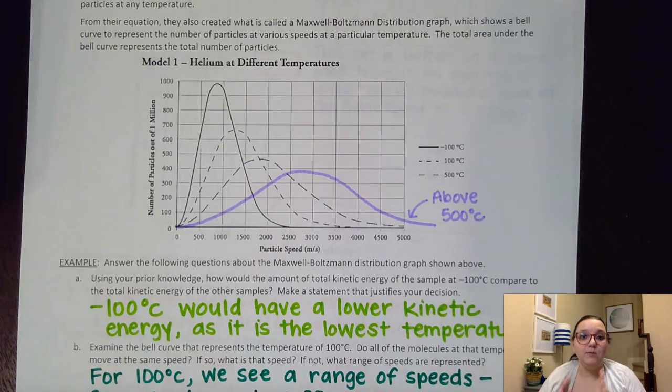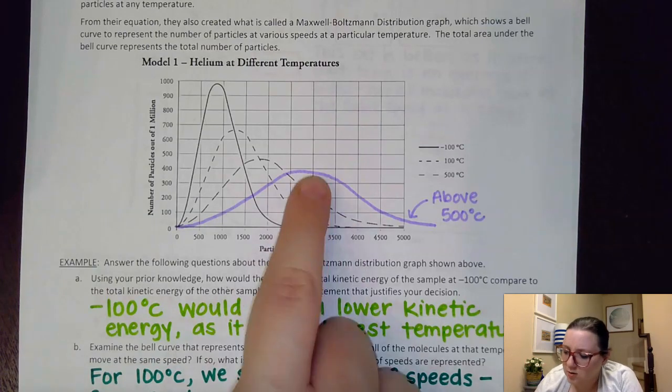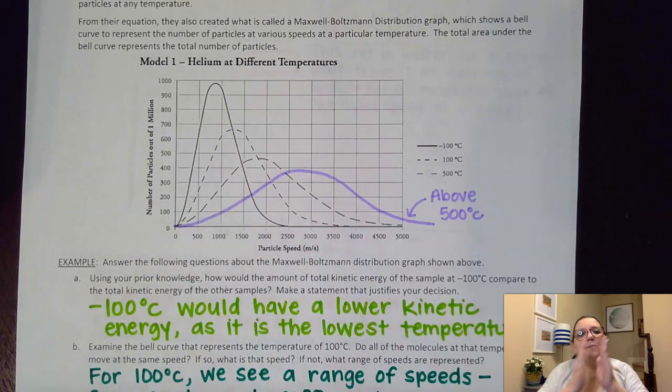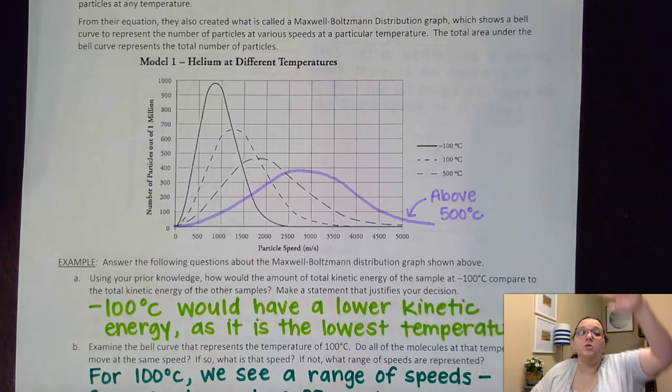Notice that at a particular temperature I get a range of speeds. Some particles at 500 degrees Celsius are moving really slow. Some are moving really fast. But the average peak of those graphs is increasing for an increasing temperature which causes the peak to flatten out.